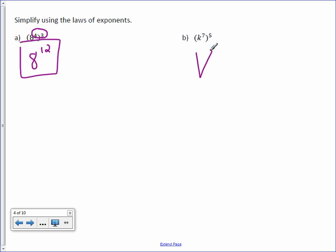We keep the base, multiply the exponents, and we get K to the 35th.